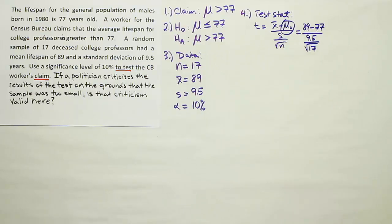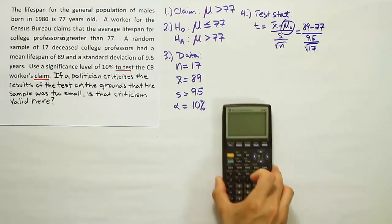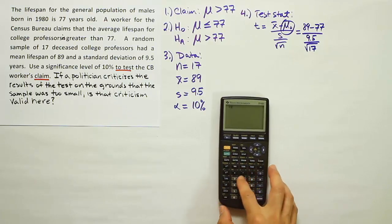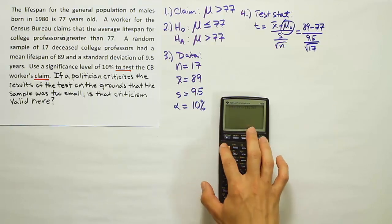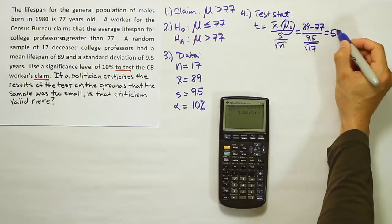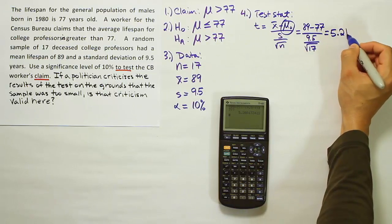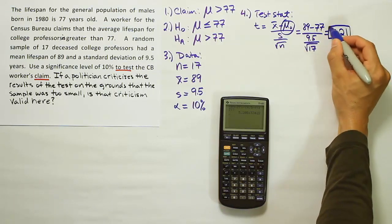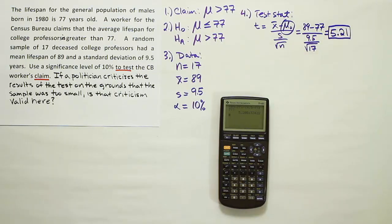Let's work that out and see what we get. We'll have 89 minus 77 divided by 9.5 divided by the square root of 17. Don't forget to put your top and bottom parts of that fraction in parentheses. When you're done, you get a very large test stat. We get a test stat of 5.21 when I round off to the hundredths place.